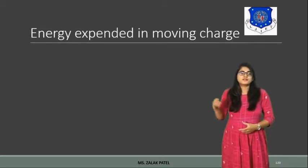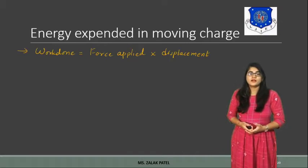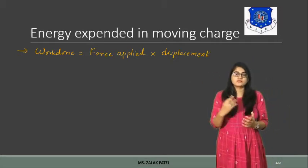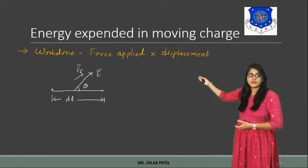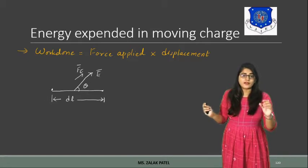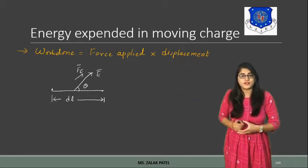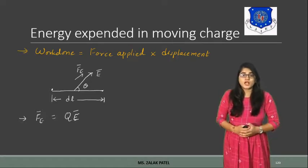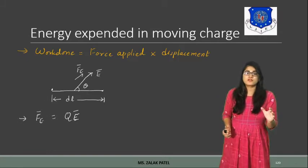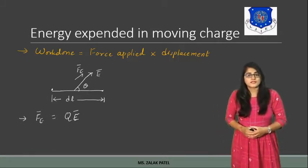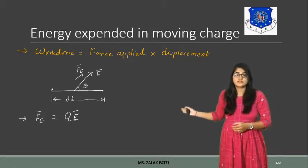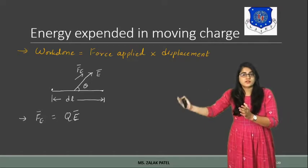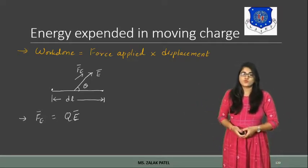First, let me discuss about the energy expended in moving a charge. The charge is denoted by Q, and work done is basically force applied times displacement. Here, force Ft is our electric force with electrical field intensity E and displacement DL. Comparing force and field intensity equations — F equals Q squared upon R squared AR, and E equals Q upon R squared AR — we see that force equals Q times E, so Ft equals Q into E.